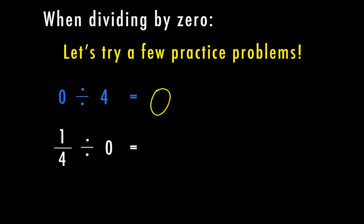But what if I have one fourth and I'm dividing it into zero groups? Well, I can't have zero groups. So in this case, it is undefined, can't happen.